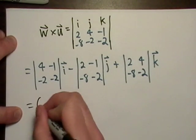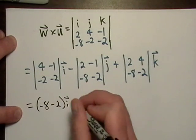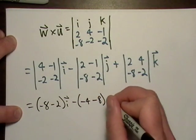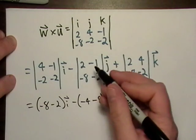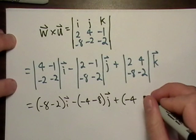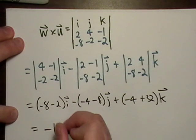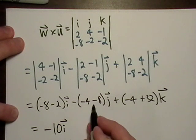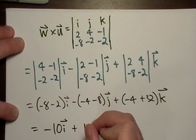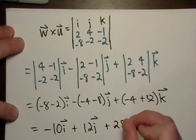So what do we get? Negative eight minus positive two. Then it looks like we got negative four minus regular eight. Because we had a negative times negative is a positive. So we subtracted it. And look, we got negative four minus negative 32. So that's plus 32. So what do we get here? We get negative 10 I. That's negative 12 times another negative when we put it back in there. So that's a plus 12. And then we're positive 28.